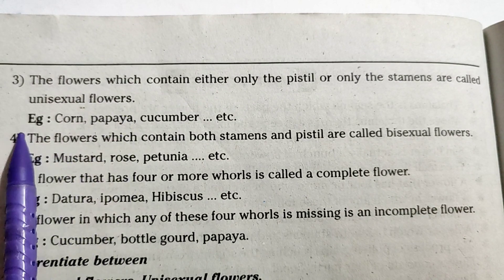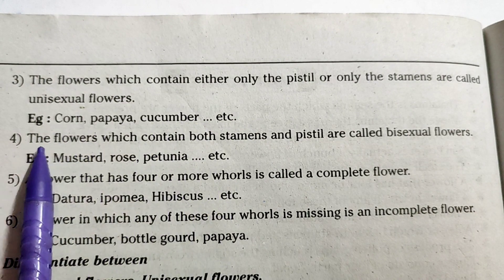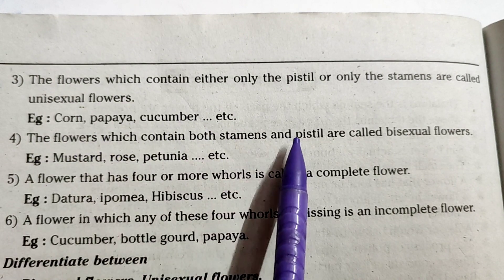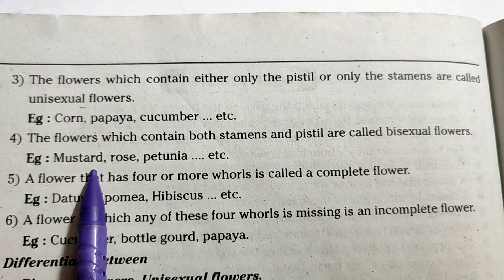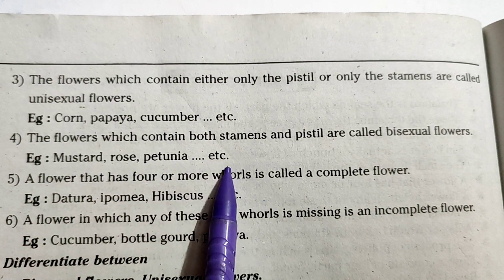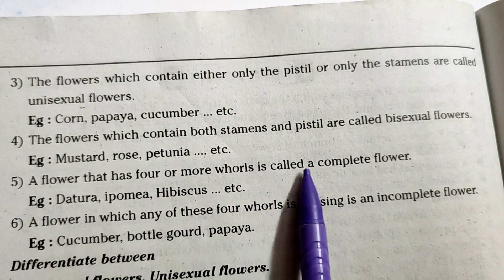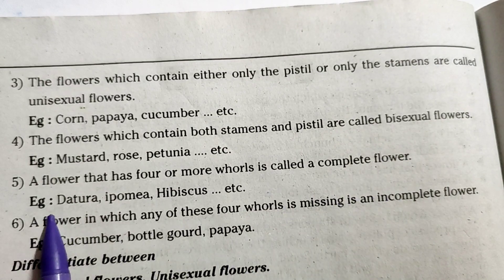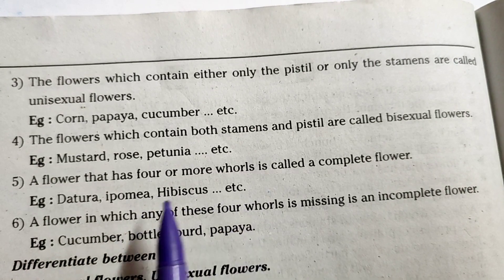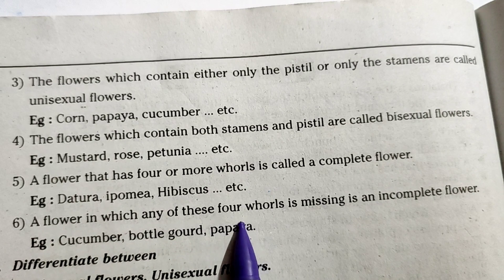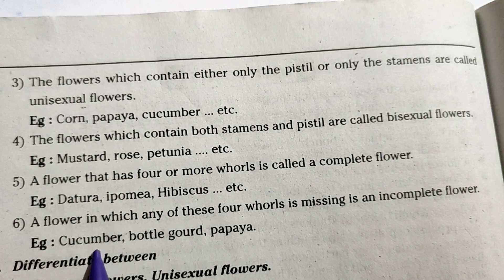Examples of unisexual flowers: corn, papaya, cucumber, etc. Flowers which contain both stamens and pistil are called bisexual flowers — examples: mustard, rose, petunia, etc. A flower that has all four whorls is called a complete flower — example: datura, ipomoea, hibiscus, etc. A flower in which any of these four whorls is missing is called an incomplete flower — example: cucumber, bottle gourd, papaya.